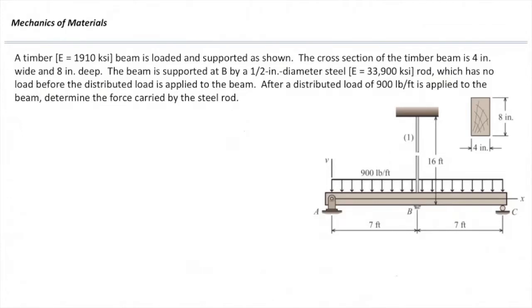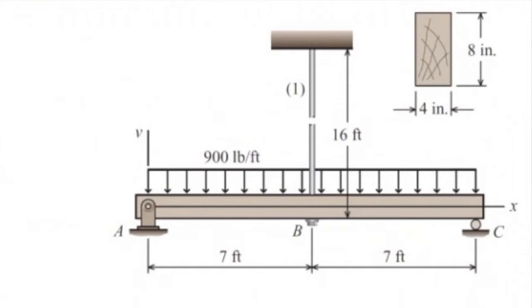A timber beam with the modulus of elasticity of 1910 KSI is loaded and supported as shown. It is loaded by a distributed load of a value of 900 pounds per feet and is restrained at the left by a pin support and at the right by a roller support.